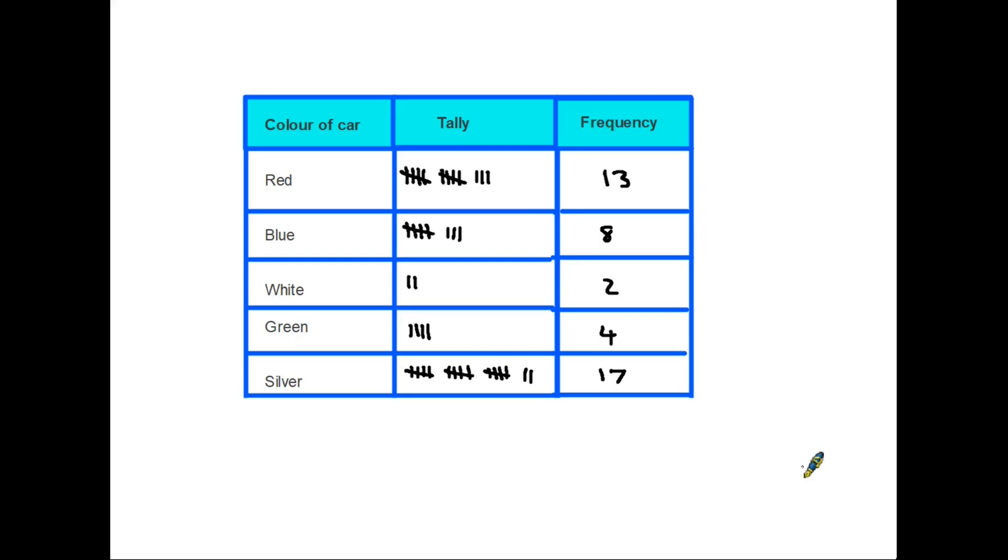Before we actually start building the graph, let's have a look at the information that we're going to use to put in it. We have here a frequency table and it is simply a table showing the colors of cars in a car park. So we have the number of colors down the side, they have been counted by using tally and added up for the final column.